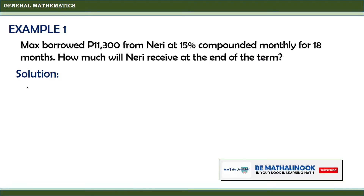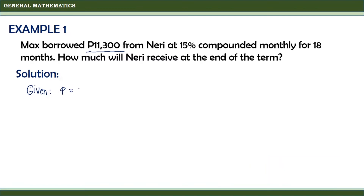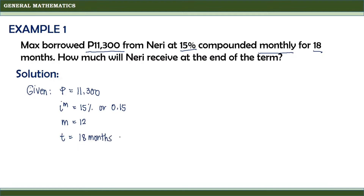To do that, we need to write down all the given values first. Since Max borrowed 11,300, then P, the principal, is equal to 11,300. The interest rate is 15%, so i_m equals 0.15. The frequency of conversion is compounded monthly, so m is equal to 12. The time is 18 months, which equals 1.5 years — remember that the term should always be written in years. To solve for the future value, we use the formula F equals P times the quantity 1 plus i_m divided by m, raised to mt.